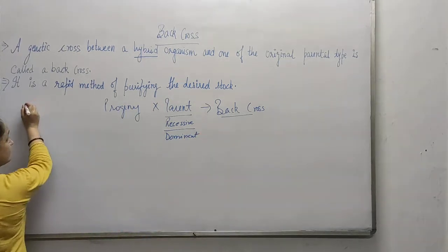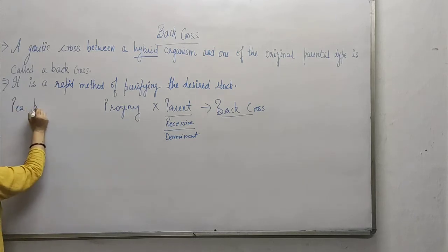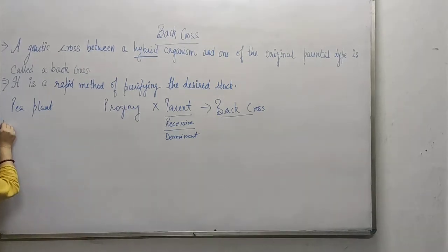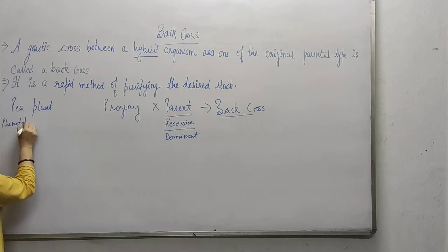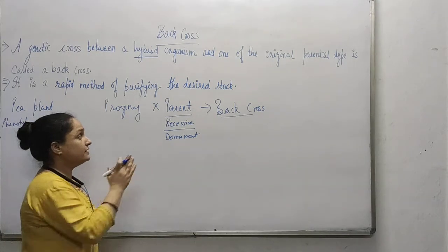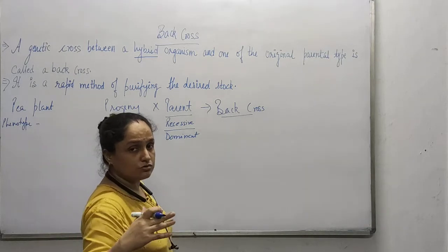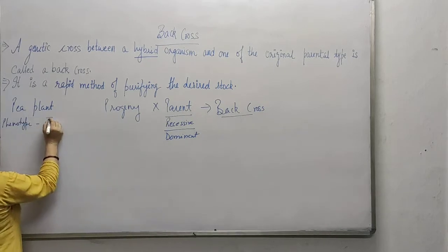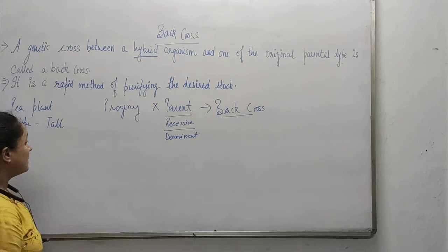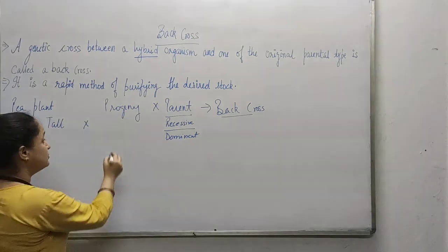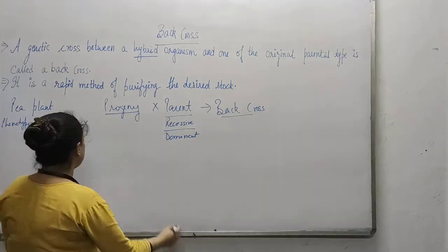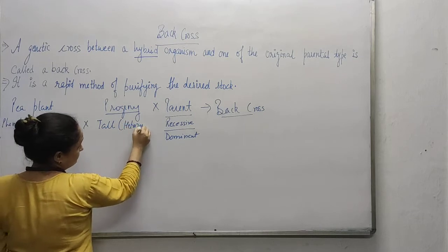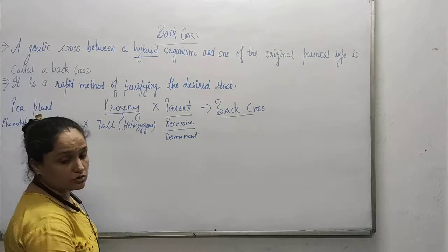Let's start. Here we are going to take the example of a pea plant, and we have considered the character of height. I have already told you that we are going to do the cross with either parent — it may be dominant or it may be recessive. So here the phenotype taken is tall, and it is going to cross with the progeny. The progeny which we got in the monohybrid cross was also tall but heterozygous — it was heterozygous tall.